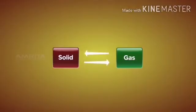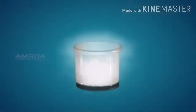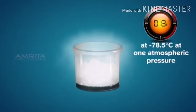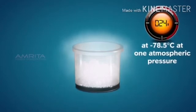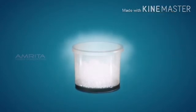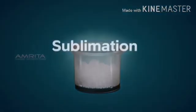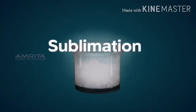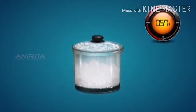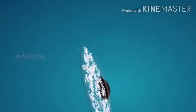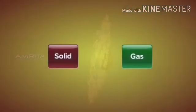Will a solid be directly converted to gas and vice versa? When dry ice is kept at minus 78.5 degrees Celsius at one atmospheric pressure, dry ice is converted to gas. This process is called sublimation. And when the gas so formed is trapped, it accumulates to form dry ice again, showing that a solid can be directly converted to gas and vice versa.